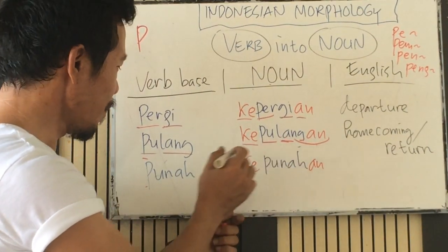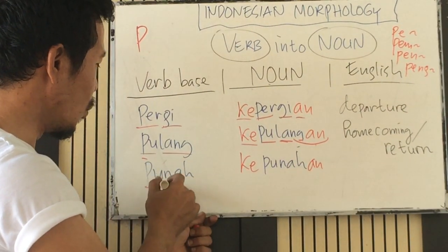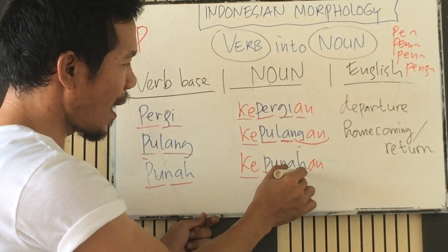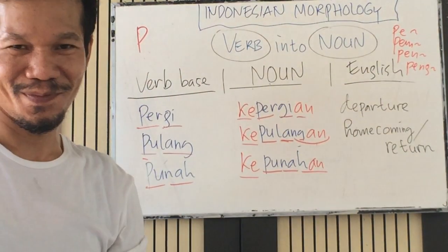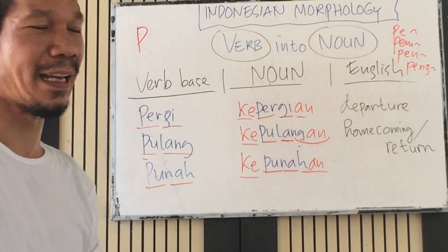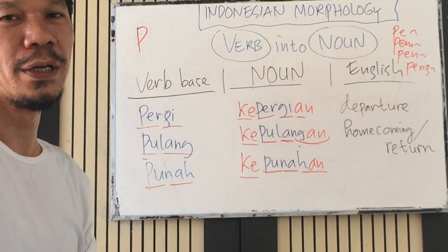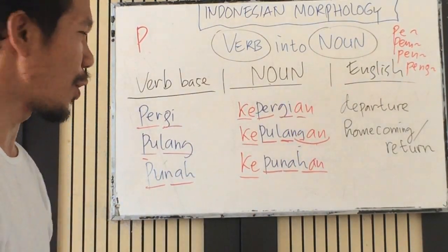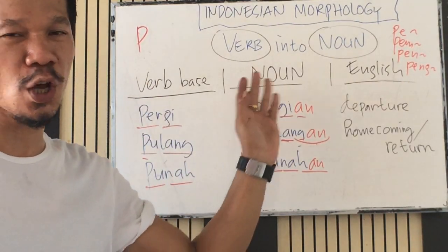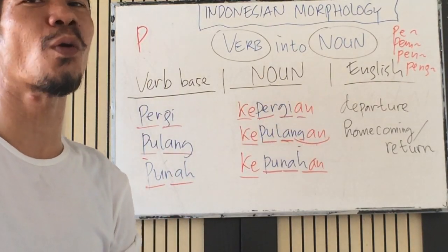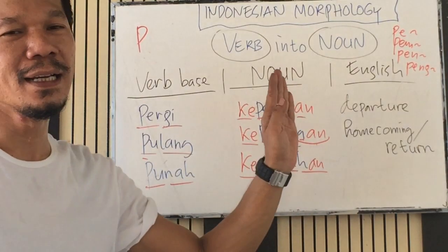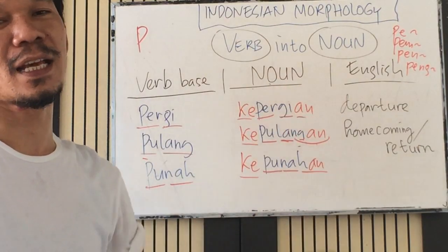Let's practice all three: pergi → kepergian, which in English means 'departure'. Pulang → kepulangan, which means 'homecoming' or 'return'. Punah → kepunahan, which means 'extinction'.